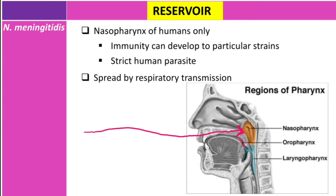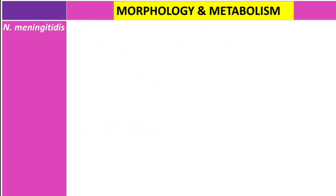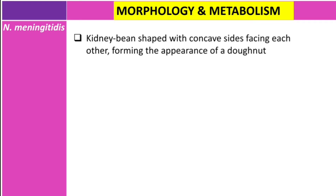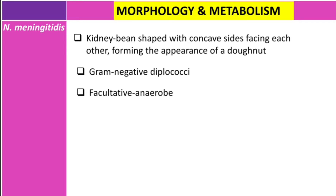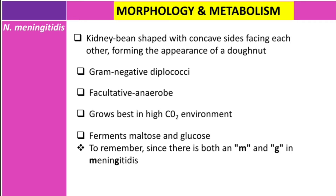This bacteria is kidney-shaped with concave sides facing each other, forming the appearance of a donut. It is a gram-negative diplococcus, facultative anaerobic, and grows best in a high carbon dioxide environment. It has the ability to ferment both maltose and glucose. This is very important to differentiate it from Neisseria gonorrhoeae — in the word 'meningitidis' you find M for maltose and G for glucose. Neisseria gonorrhoeae only ferments glucose, not maltose.